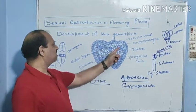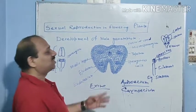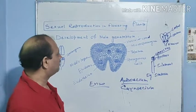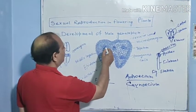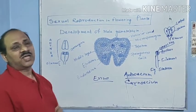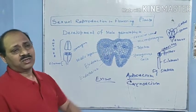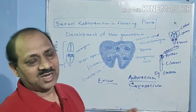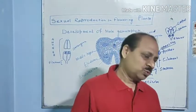Each lobe contains two longitudinal sacs known as microsporangia. The vascular strand structure helps in transportation. Microsporangia contain sporogenous cells, which are diploid cells — meaning they contain two sets of chromosomes.